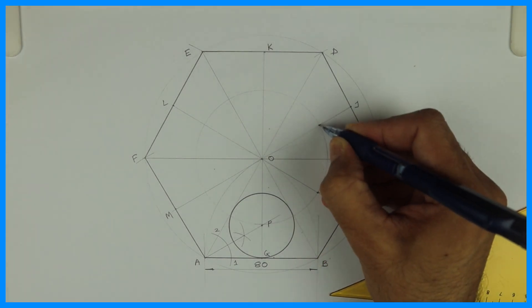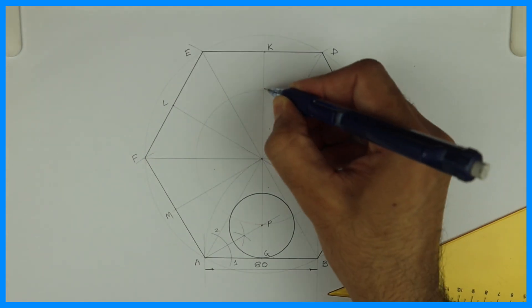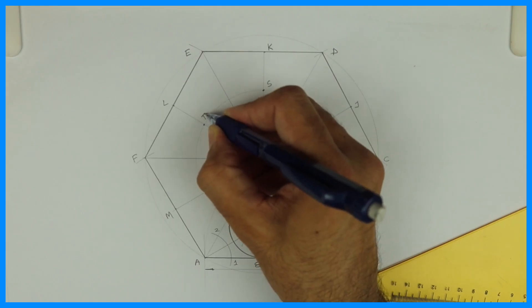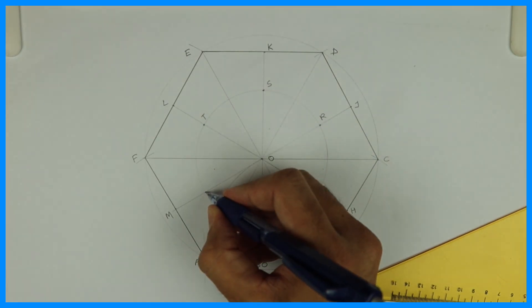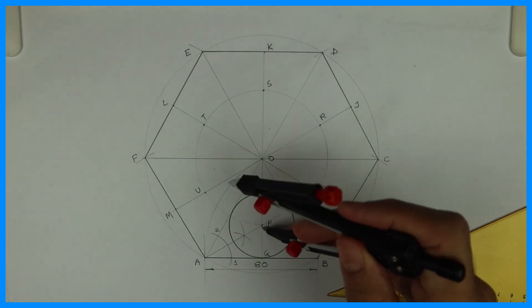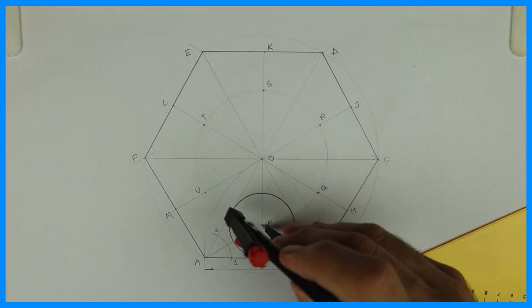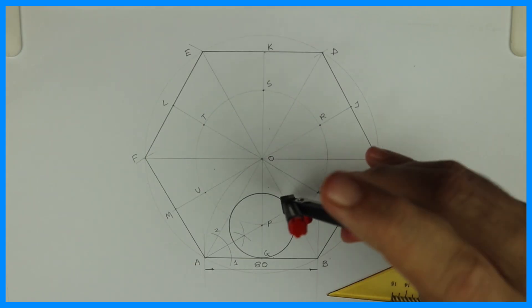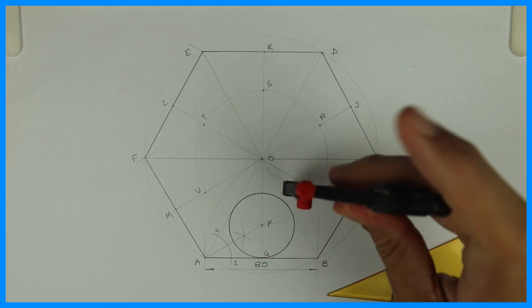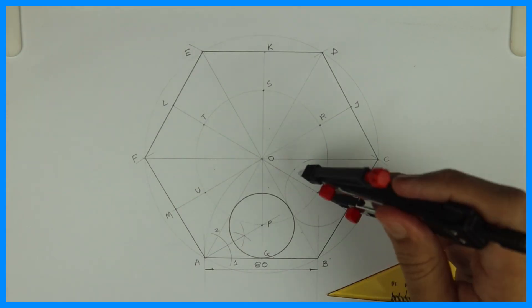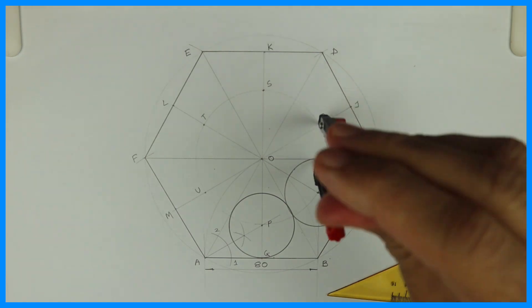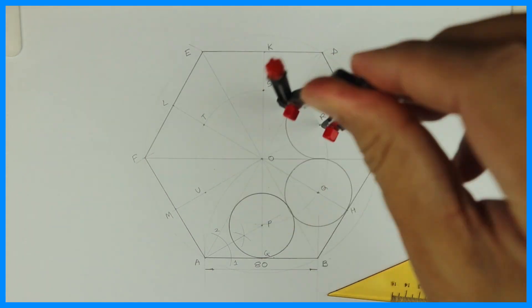So we are transferring point OP. So we'll get Q, on this line we'll get R, S, T, and U. So take radius P to G and you cut from Q, R, S, T, U. So we'll get the required circles in a hexagon.